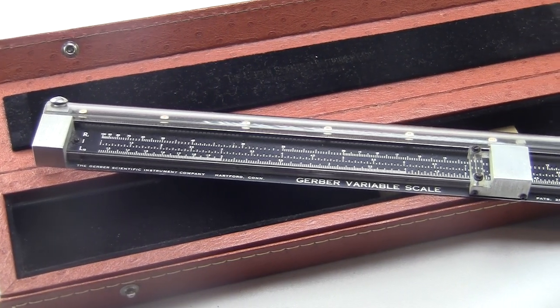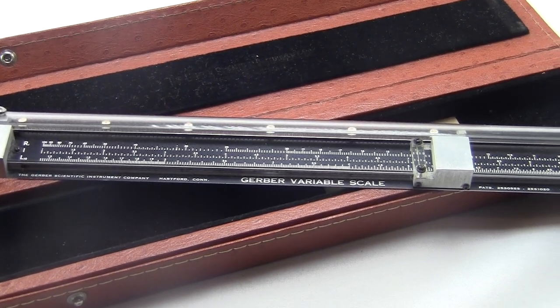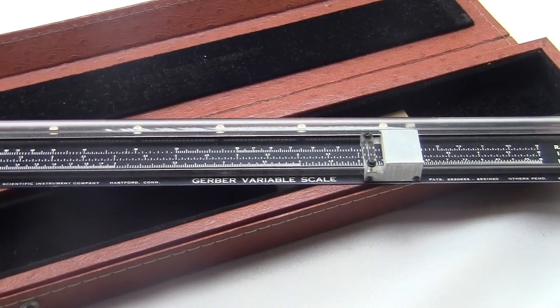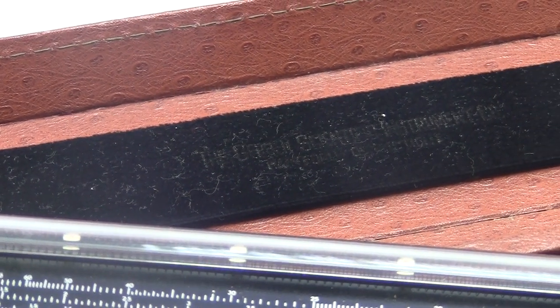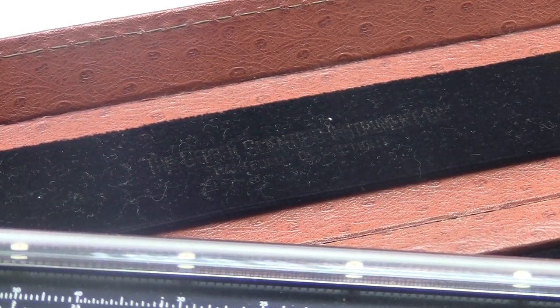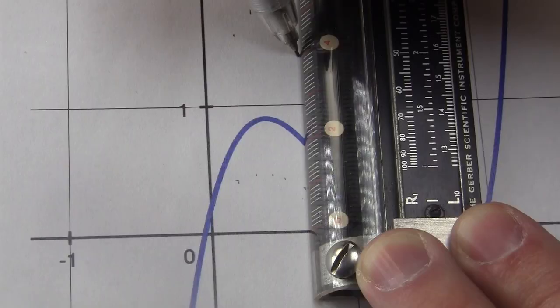Most of my videos are about old machines which have been made entirely obsolete by modern electronics. But this thing here, actually, I don't know of any modern tool that can do this kind of thing better than the Gerber variable scale. Just think about it.